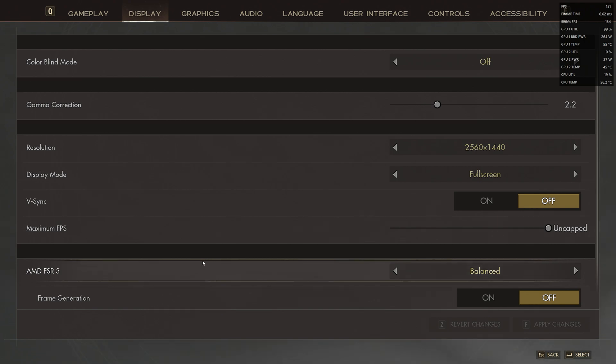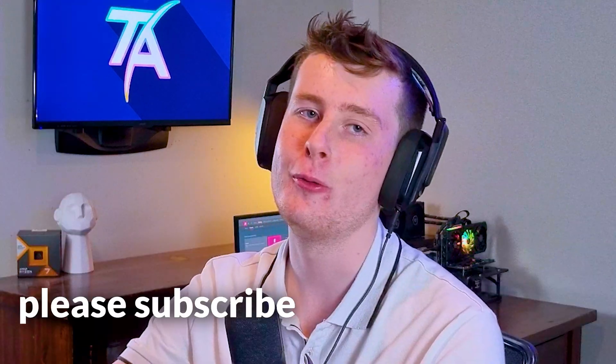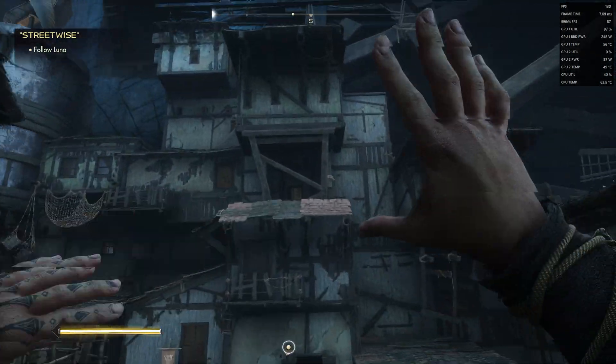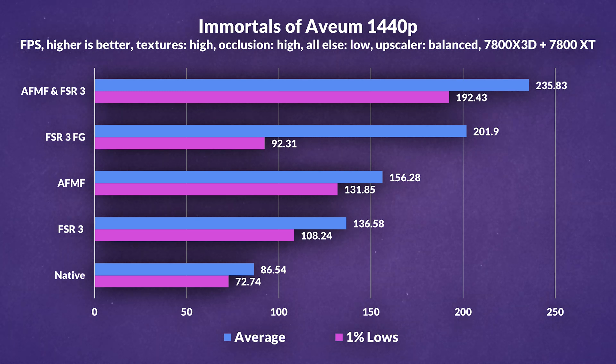Now testing FSR 3 Super Resolution on its own without frame generation and without Fluid Motion Frames. With just FSR 3 Super Resolution set to Balanced, we're getting around 130–150 FPS. It does feel a tiny bit smoother without frame generation. With just Super Resolution, we got around 136.58 FPS — 58% more than native — and 1% lows around 108.24, which is 17% more than FSR 3 with frame generation. It was a tiny bit smoother using Super Resolution on its own.